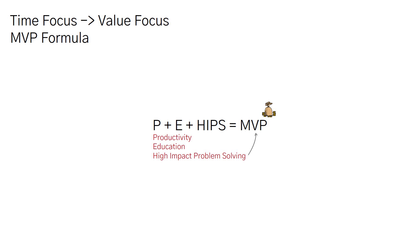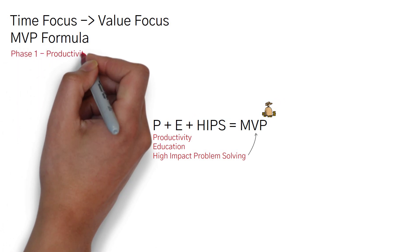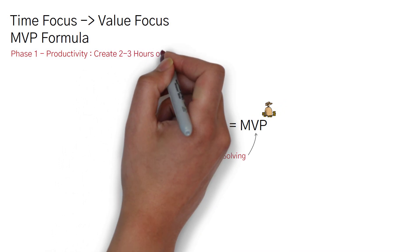So let's break down this formula a little bit more so you have a better understanding of it. P, productivity. So the first phase of this course talks about how to maximize your productivity in order to create two to three hours of extra time each day.